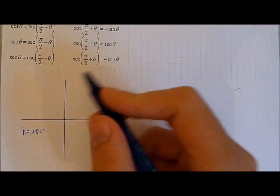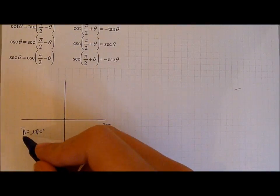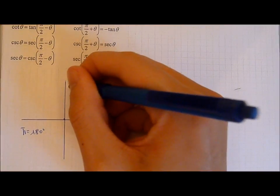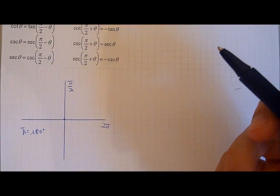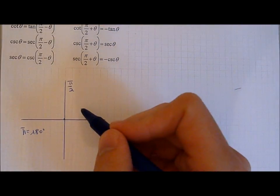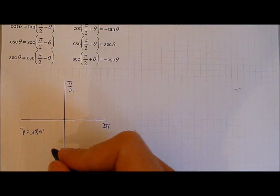Halfway between 0 and 180 degrees or pi is pi over 2. For cofunction identities we only have to worry about quadrant 1 and quadrant 2 so these are not relevant.